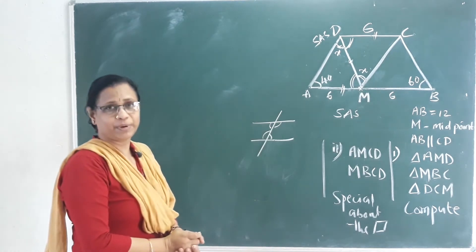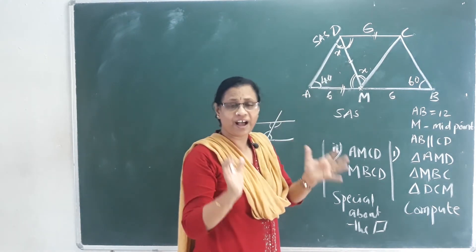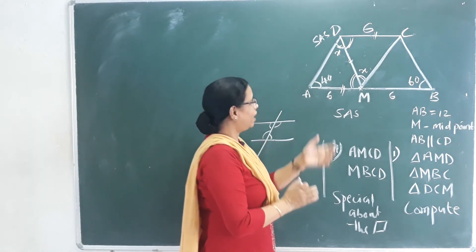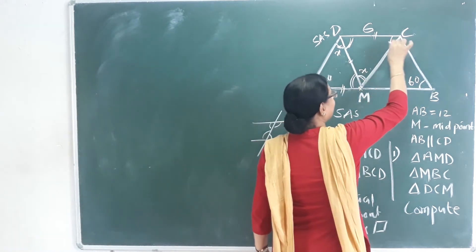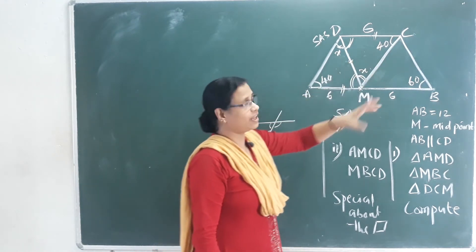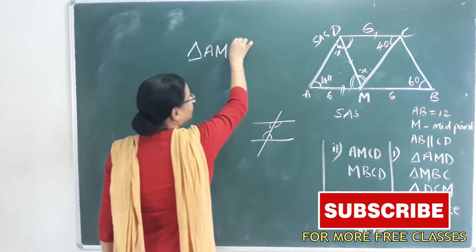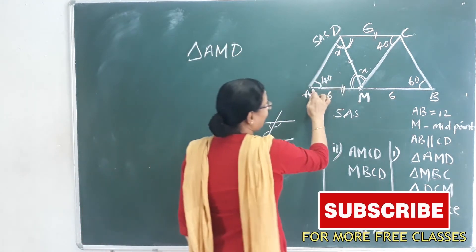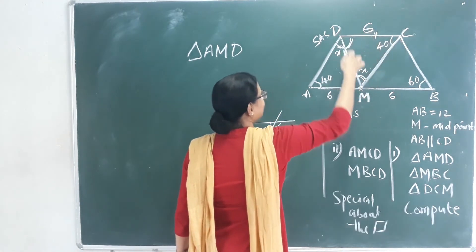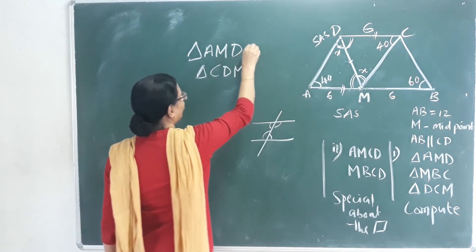Congruent triangles have all sides and all angles equal. Triangle AMD and triangle CDM are congruent. Angle A equals angle C. Angle M equals angle D. Since these two triangles are congruent, all corresponding angles are equal.